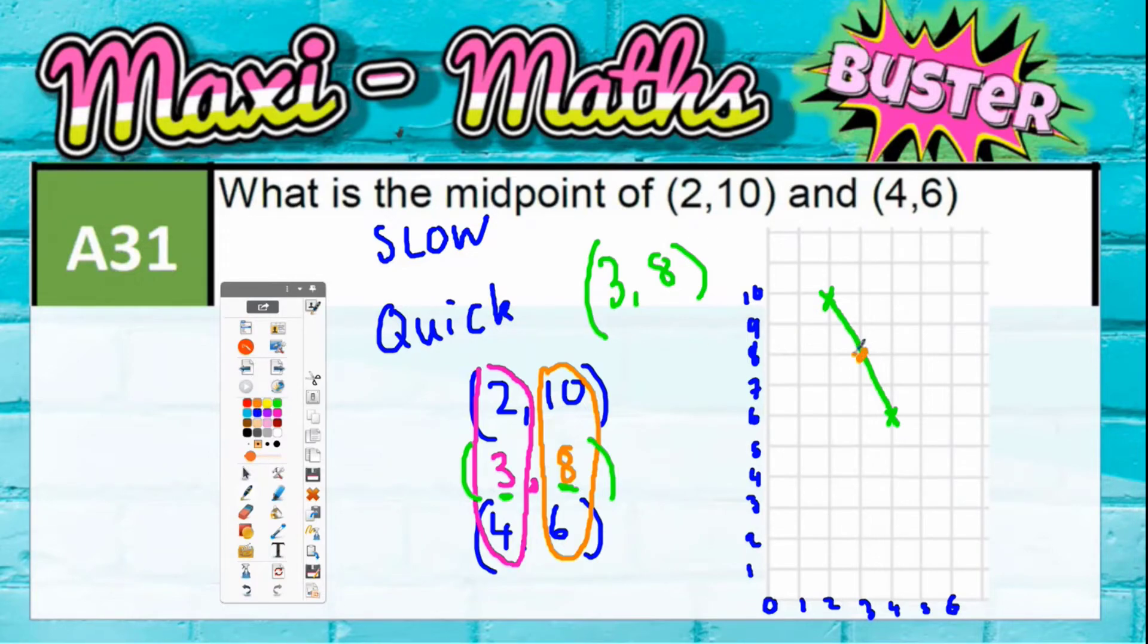And the middle of that line, as you can see, is going to be there. And that point is, if you read it all the way down, is 3. So 3 across the bottom. And it's going to be level with 8 up the side. So as you can see, 3 comma 8.